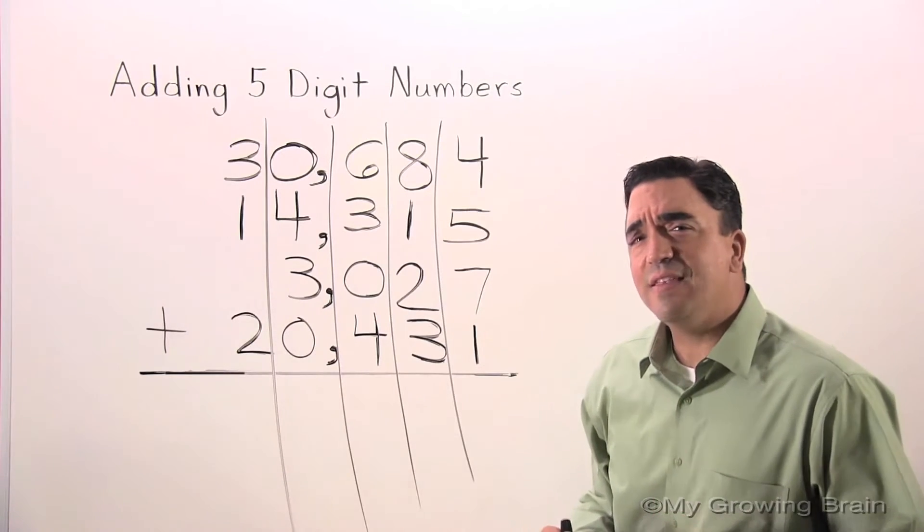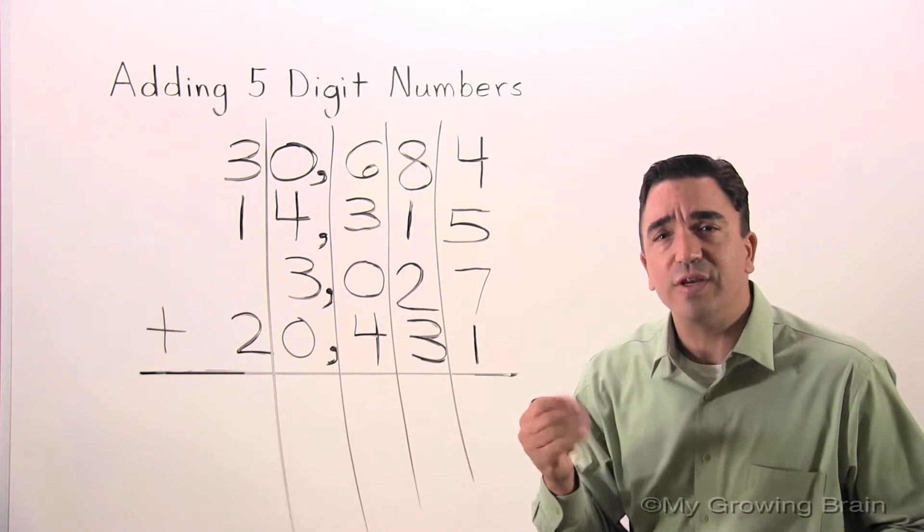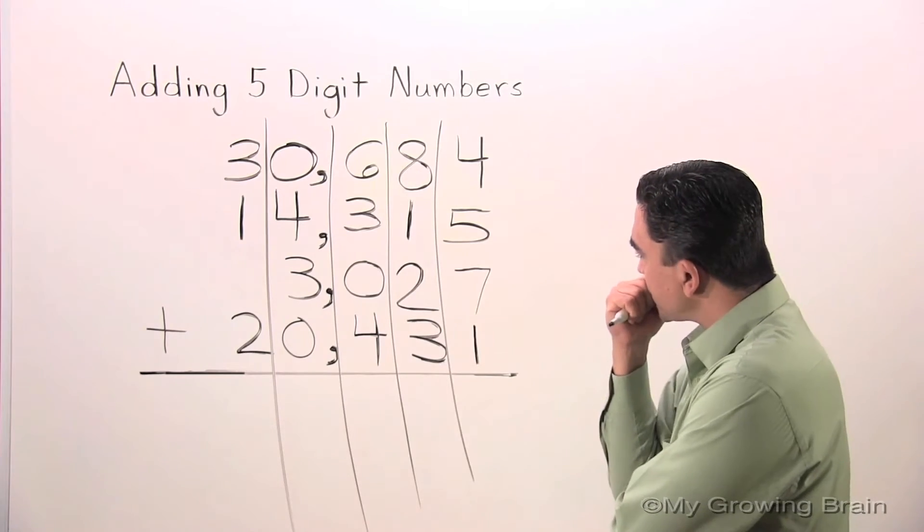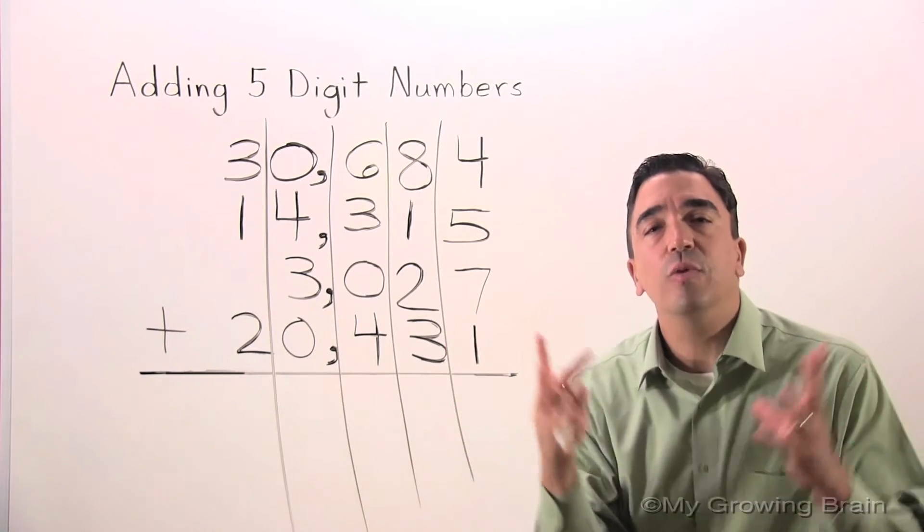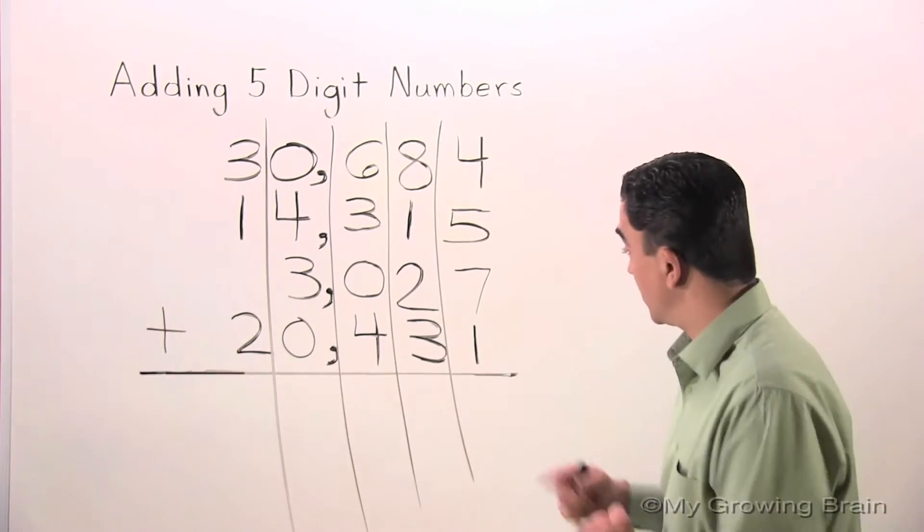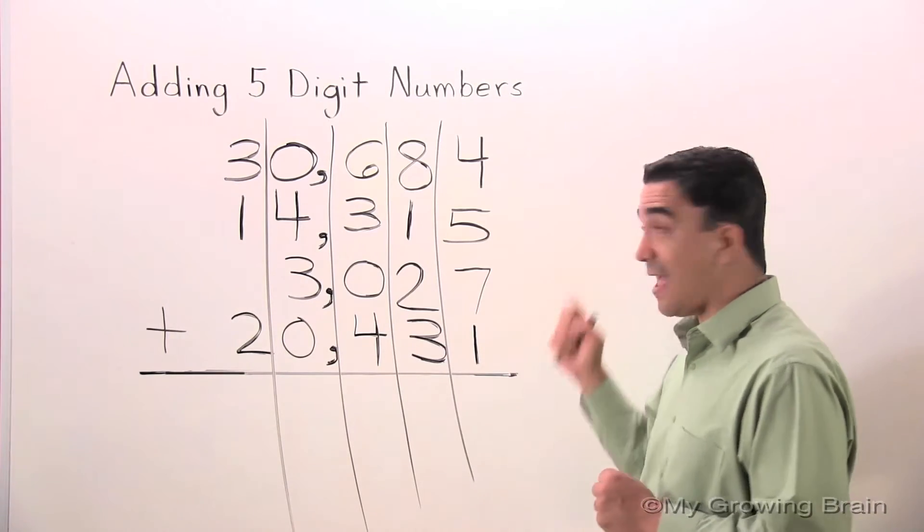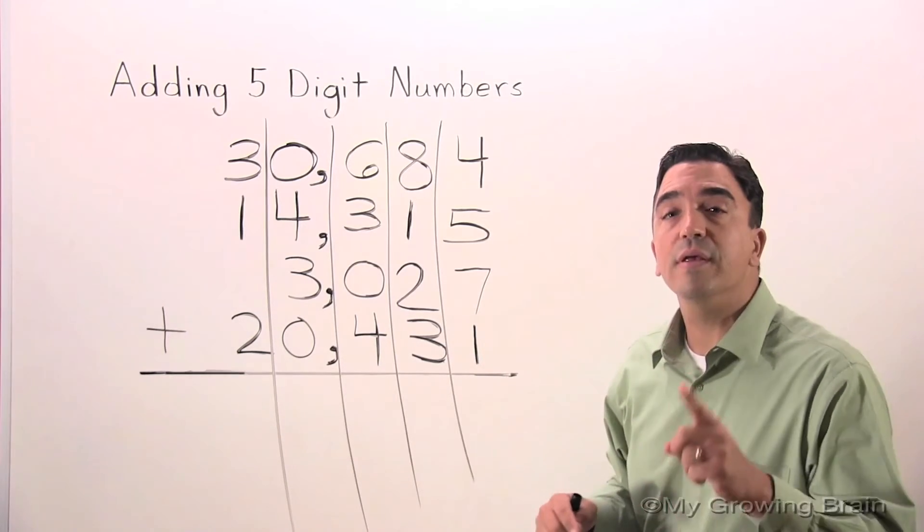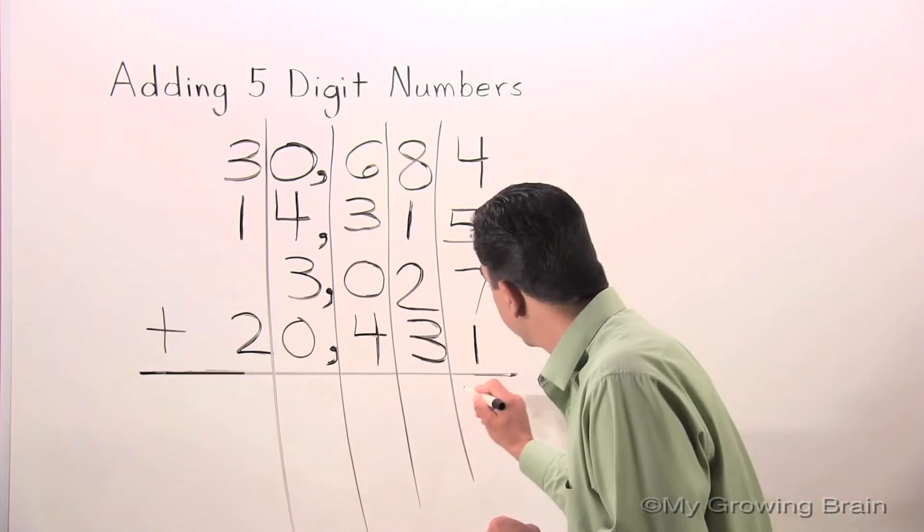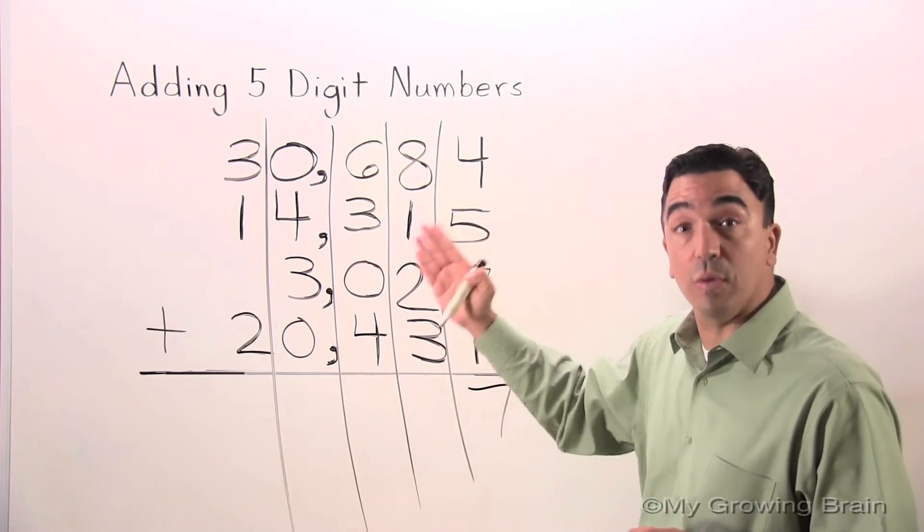I think I'm going to need to think of a strategy to help me add these four digits together. How about putting them in groups of ten? Five and four? Nine. Nine plus one? Ten. Ten plus seven? Seventeen. Ten. I'm going to carry the one or regroup the one.